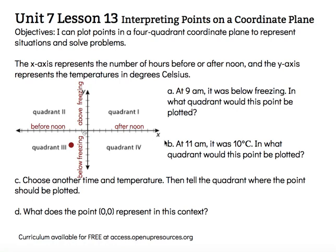Letter B said, at 11 a.m., it was 10 degrees Celsius. In what quadrant would this point be plotted? Well, 11 a.m. is before noon, so I would go left. 10 degrees is above freezing, so I would go up. So I would go to the left and up, and that would put me in quadrant 2.